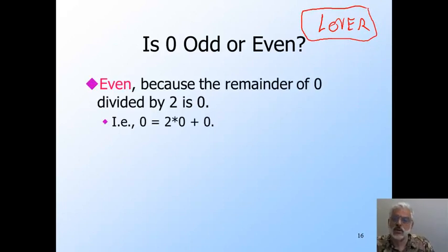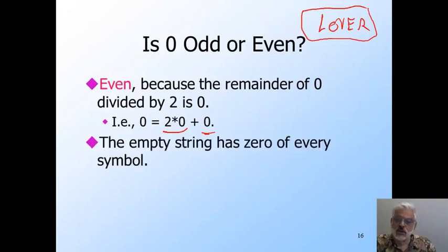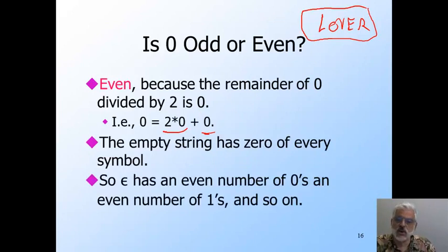But we know that 0 is even because it leaves remainder of 0 when divided by 2. That is, 0 is 2 times an integer, which is 0, namely 0 in this case, plus a remainder of 0. And anything that is of the form 2 times any integer plus 0 is even. Now the empty string has 0 of every character, and 0 is even. So if we ask a question like does the empty string contain an even number of some character like 0, the answer is yes. And if we ask whether it has an odd number of 0s, the answer is no.